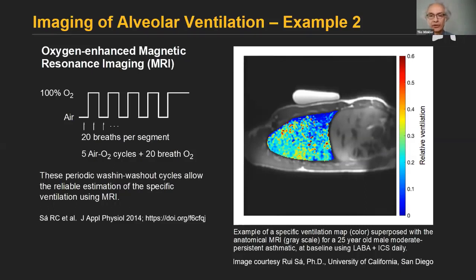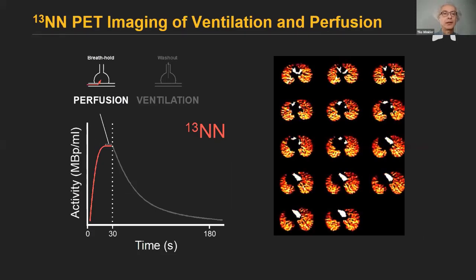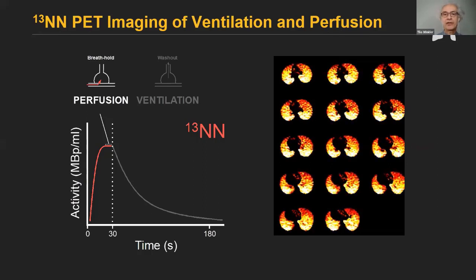In this example image courtesy of Ruisa, we see a moderate persistent asthmatic, 25 years old, and the ventilation heterogeneity in his lungs. In our lab, we have utilized nitrogen-13 PET imaging. Nitrogen-13 is a gas that we dissolve in saline. We inject it at the beginning of a breath hold and it reaches the alveolar space, where during the breath hold it diffuses in the alveoli because nitrogen has low solubility, and that image at the end of the breath hold is the perfusion image.